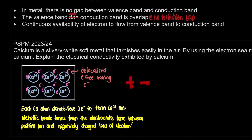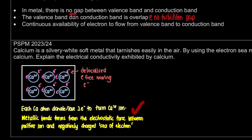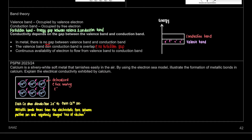Next, we need to explain how the metallic bond forms. We write that the metallic bond forms from the electrostatic force of attraction between the positive ions and the negatively charged sea of electrons. Similar to ionic bonds where opposites attract, for metallic bonds the attraction is between the cation and the electrons it has donated or lost.